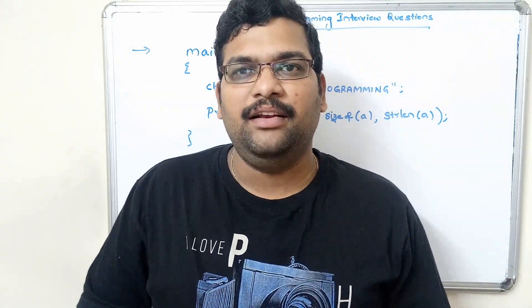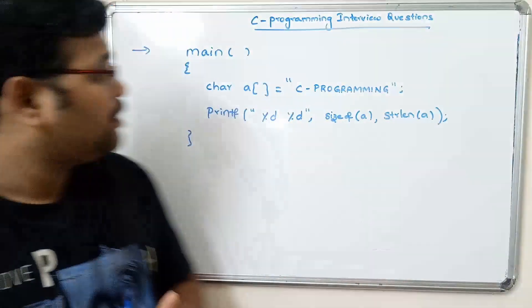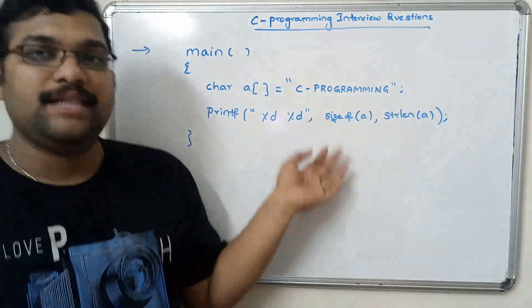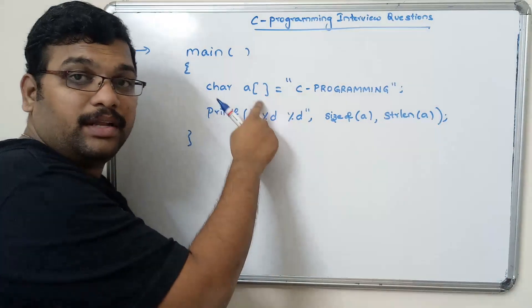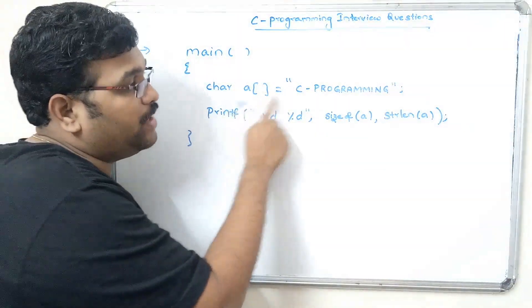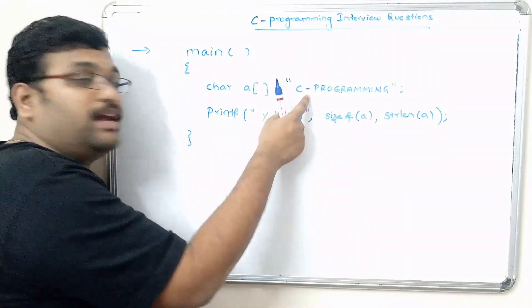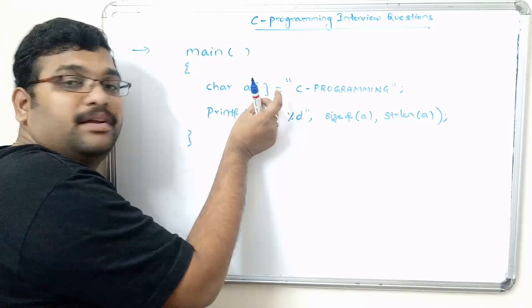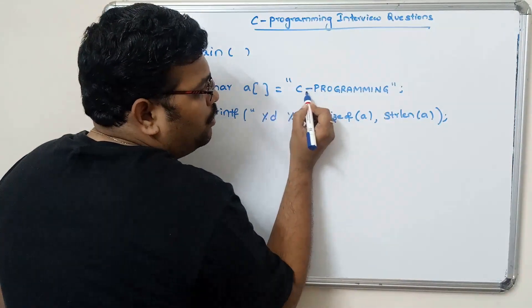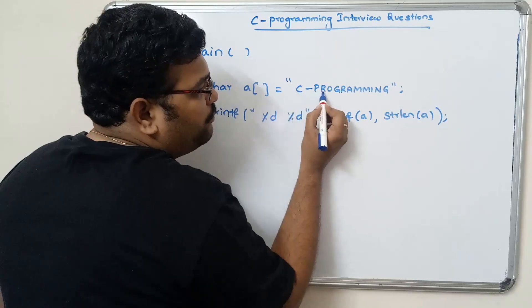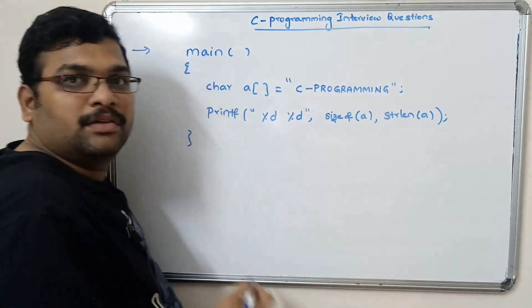Hello friends, welcome back to our channel. Let us see some more interview questions regarding addresses. Here we have a character array with no declared size, but we are directly initializing it with a string, so the length of the string will be treated as the size. The length is 0, 1, 2, 3, 4, 5, 6, 7, 8, 9, 10, 11, 12, 13.